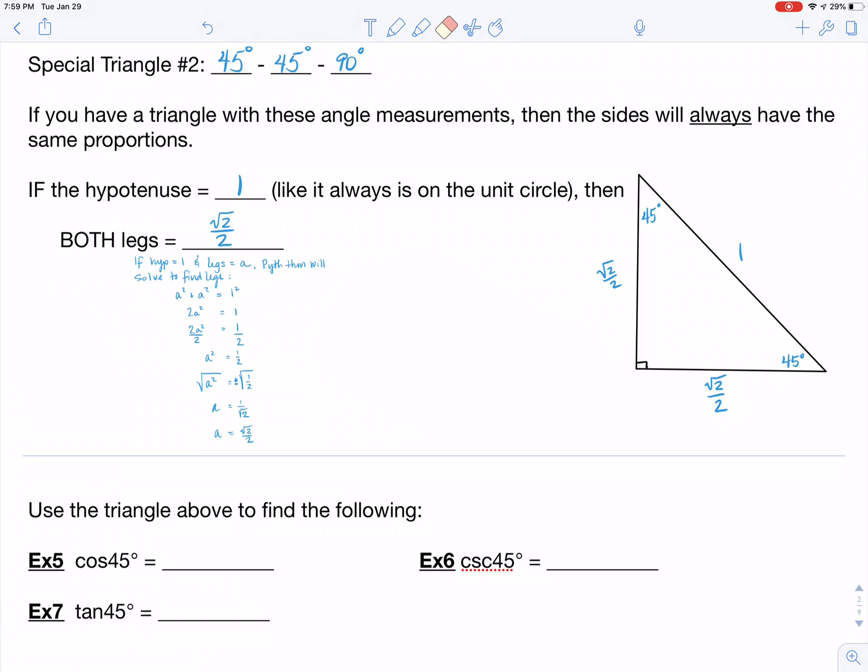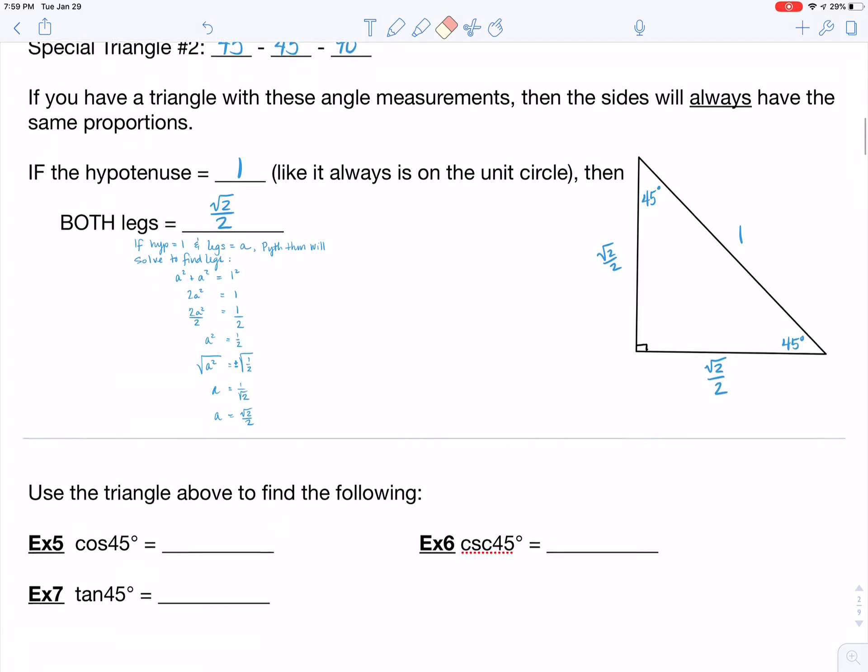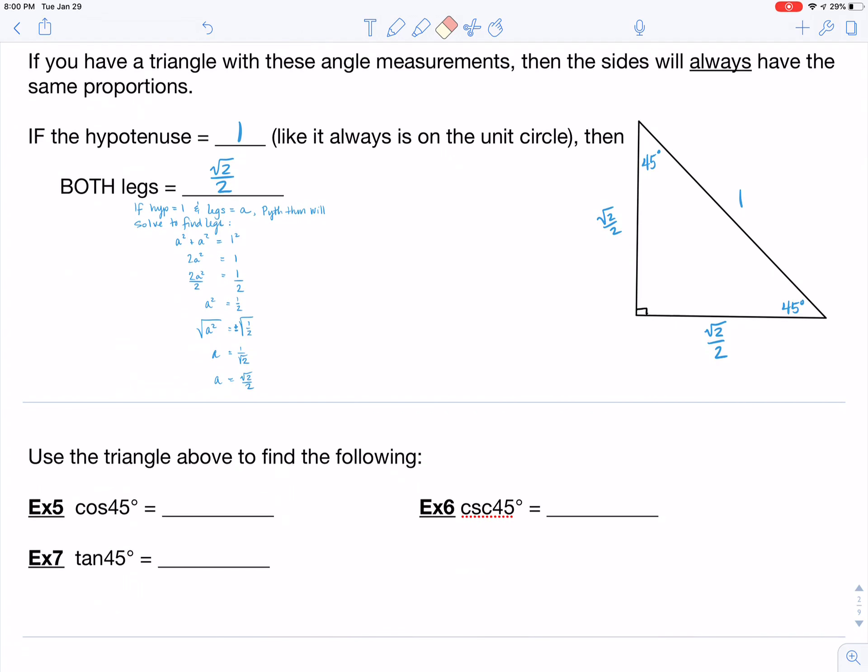So the embedded question for this particular video is to take a look at examples five, six, and seven, and using the triangle up above and using what we learned back in section 9.2 with our six trigonometric functions, go ahead and find these three trig functions that you've been given in examples five, six, and seven.